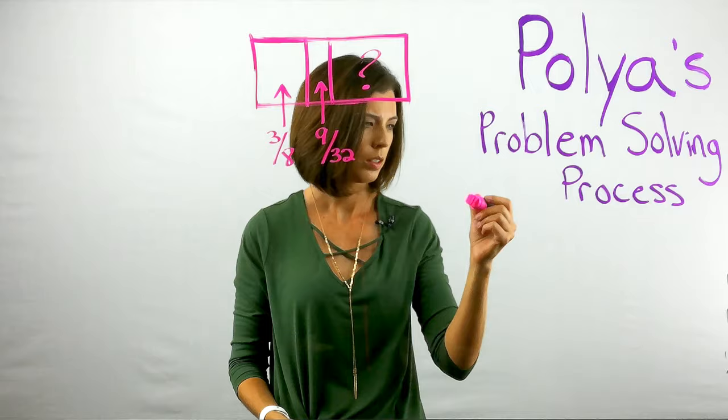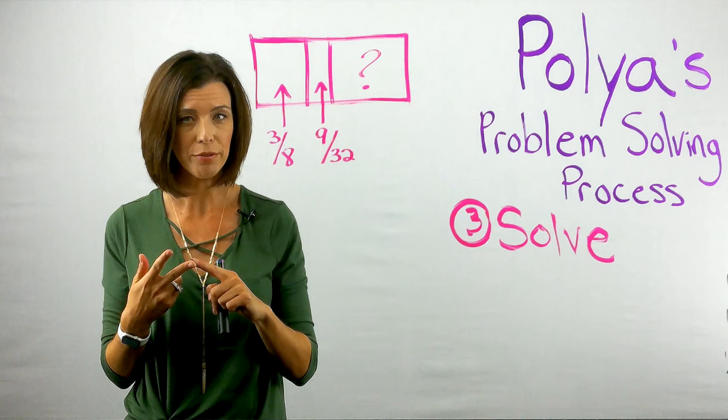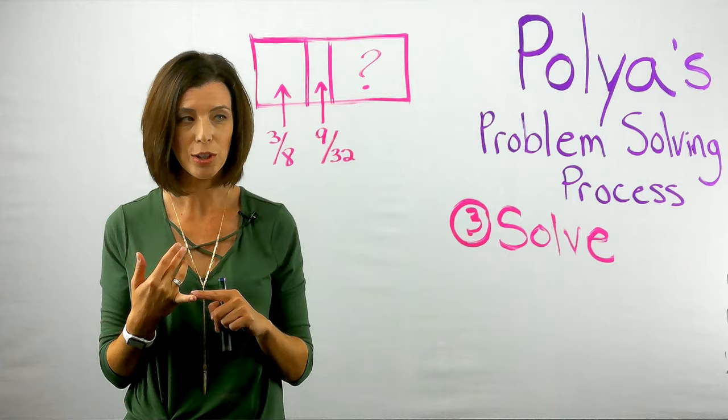Okay, so now we're ready for step three which is where we solve. We've already crossed out our information that we didn't need. We've underlined our important information. We've understood the problem. We've made a plan of how we're going to get the solution and now we're ready to solve.